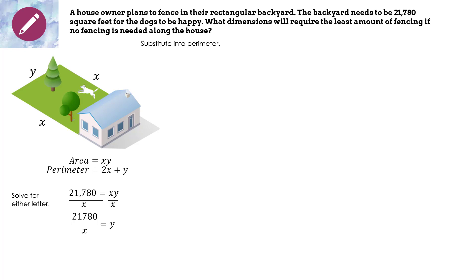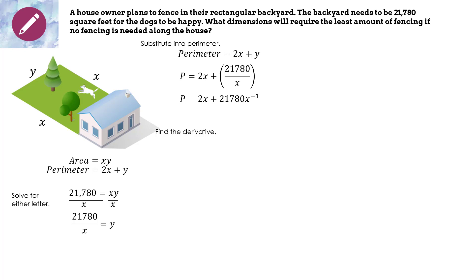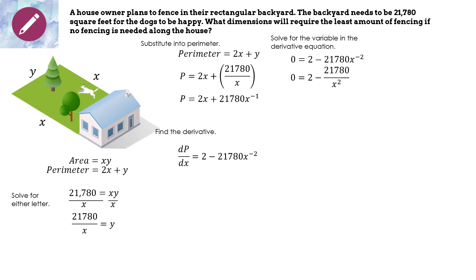The next step is to substitute that into the perimeter: perimeter equals 2x plus y, and we know y is 21,780 over x. We rewrite the fraction as x to the negative one: 2x plus 21,780x to the negative one. Now we find the derivative: 2 minus 21,780x to the negative two. We set it equal to zero: 0 equals 2 minus 21,780x to the negative two. Change x to the negative two back to a fraction, subtract 2 from both sides, and we have a perfect setup for cross multiplication.